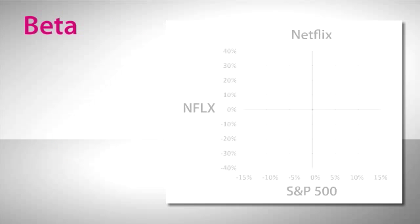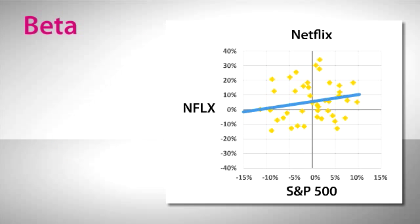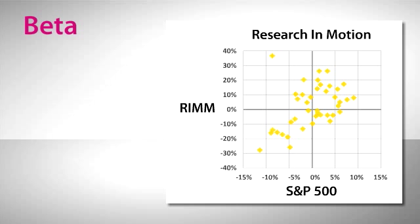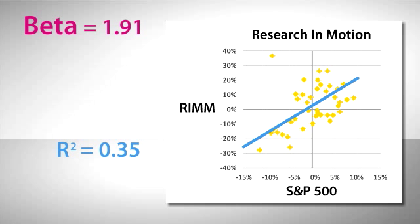Now let's look at a few NASDAQ stocks. Netflix has a beta of .48, but those dots are all over the chart, so the correlation with the S&P 500 is nearly zero. Research in Motion, on the other hand, has a much higher beta, 1.91, and a higher correlation to the market.